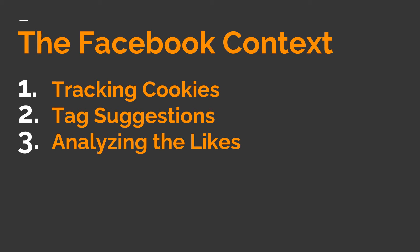Finally, they analyze likes. A recent study showed that it is viable to accurately predict a range of personal attributes that are highly sensitive, just by analyzing a user's Facebook likes. Research conducted at Cambridge University and Microsoft Research shows how patterns of Facebook likes can very accurately predict your sexual orientation, satisfaction with life, intelligence, emotional stability, religion, alcohol use, drug use, relationship status, age, gender, race and political views as well.